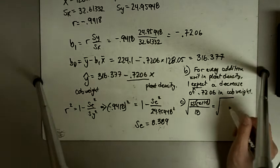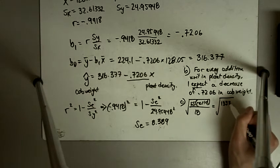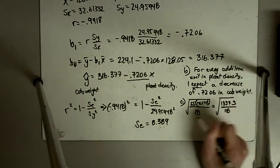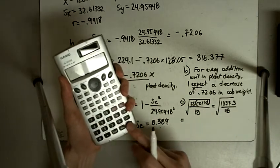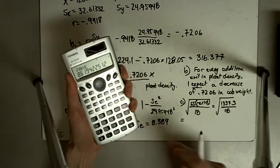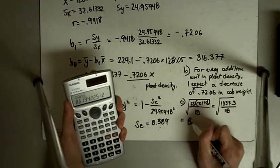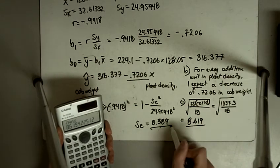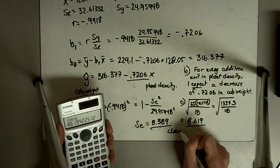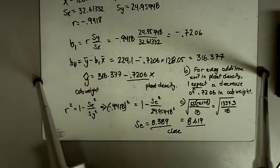So 1337.3 over 18. And I take the square root of that. And so here I get 8.619, okay? So comparing this to this, we see they're close. They're not exactly the same, but they're kind of close.